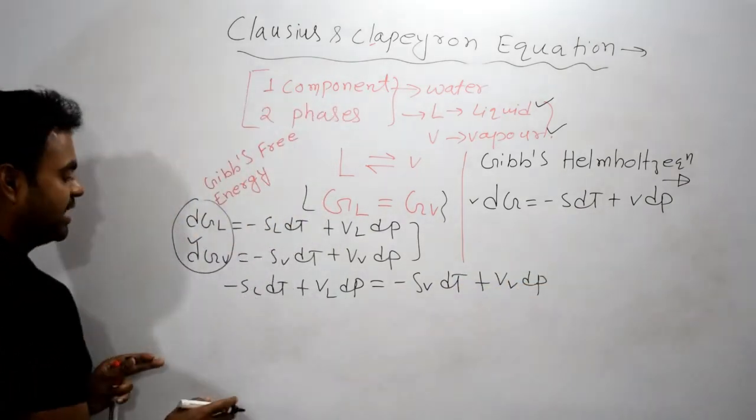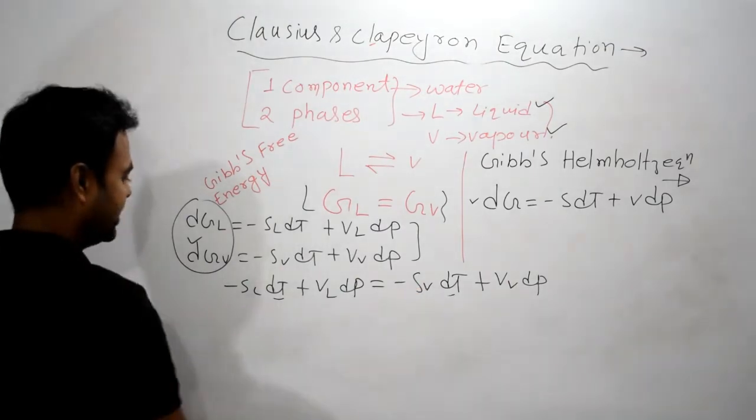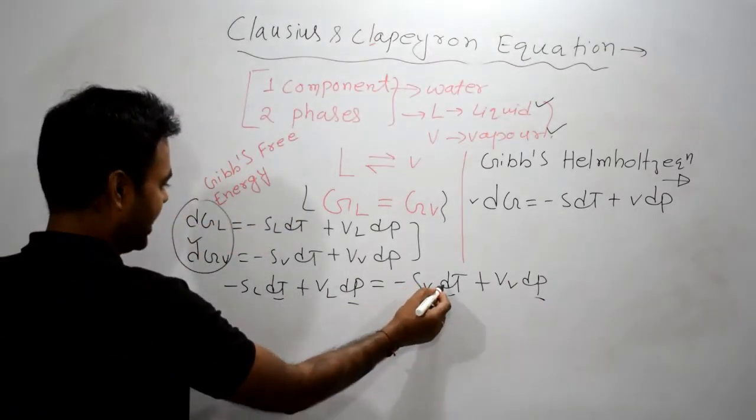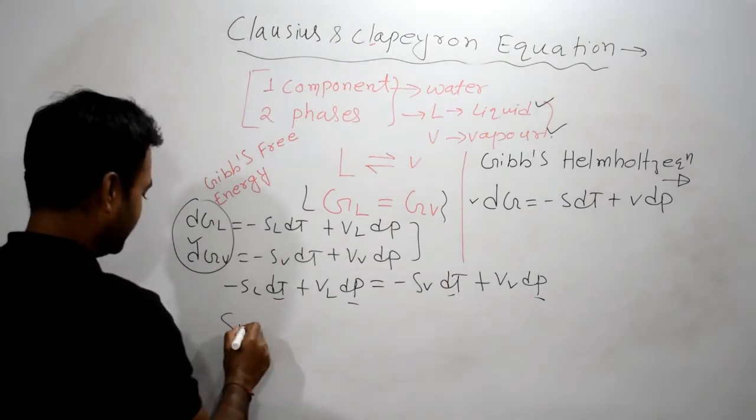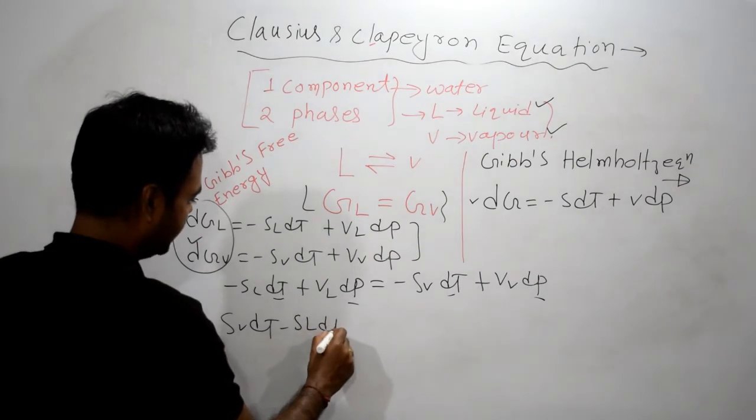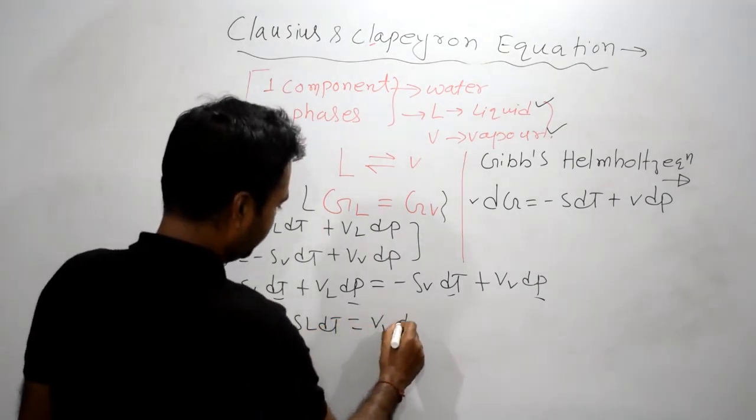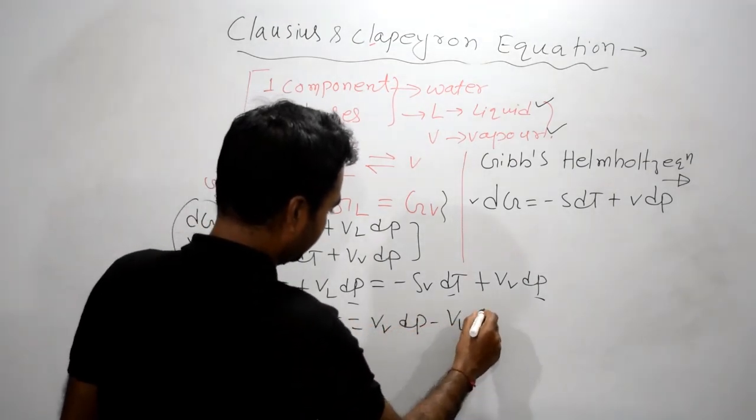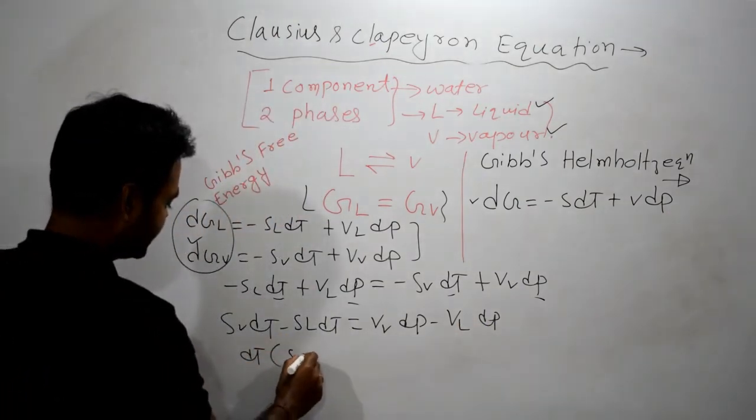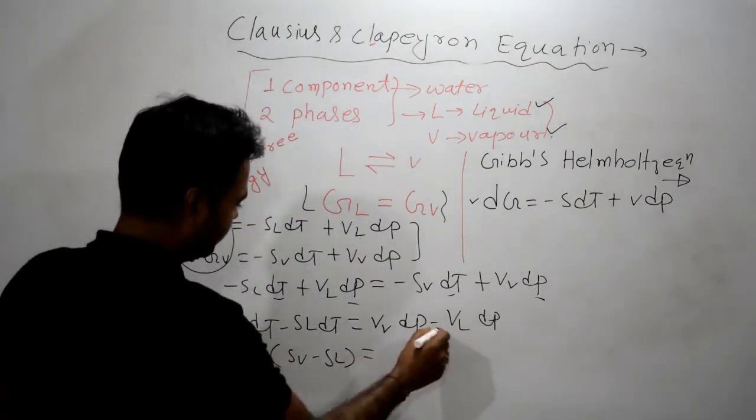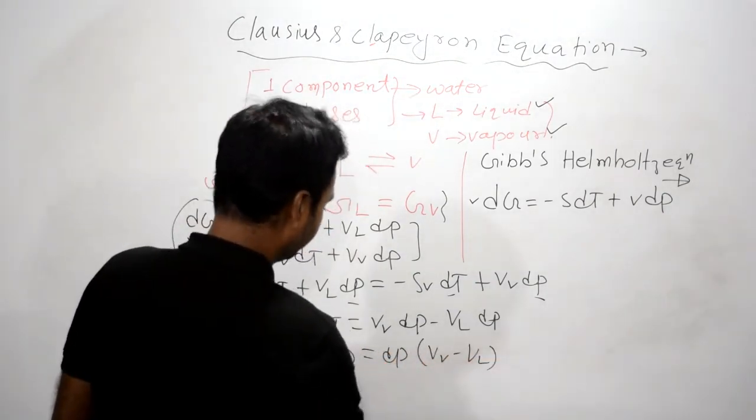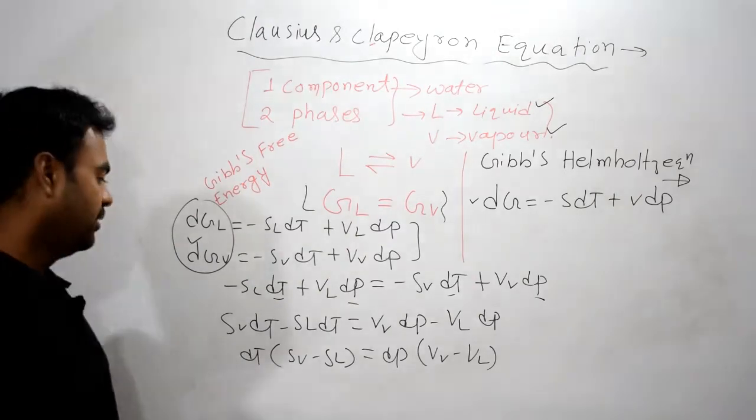Now what we have to do is separate the dT term on one side and dP term on the other side. Let me bring this term to this side: SV dT minus SL dT equals VV dP minus VL dP. Now take common dT from here, that is (SV minus SL), and take common dP from here, that is (VV minus VL).